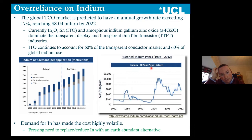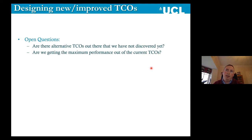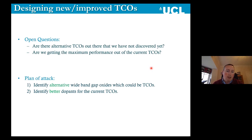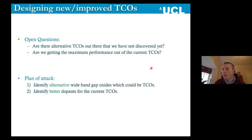In our lab, we're looking at how we can improve transparent conducting oxides and move the field forward. We have two open questions: are there alternative TCOs that we just haven't discovered yet, and are we actually getting the maximum performance out of the current TCOs? We have two plans of attack. First, identify an alternative wide band gap system and see if it can be doped to become a transparent conducting oxide — we've actually predicted two new TCOs, but they're currently being patented. The other thing we're doing is identifying better dopants for the current TCOs, because the field might have become slightly static.